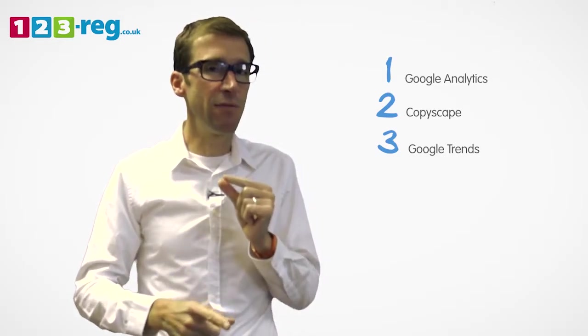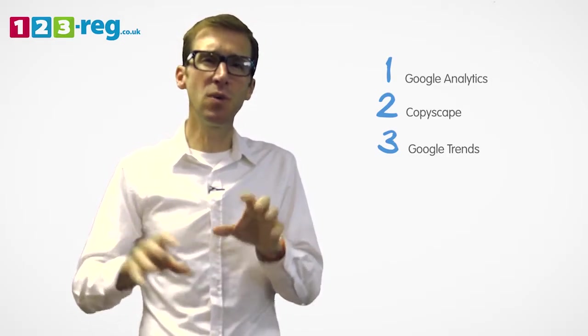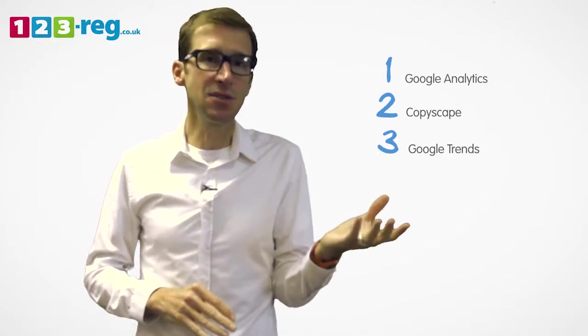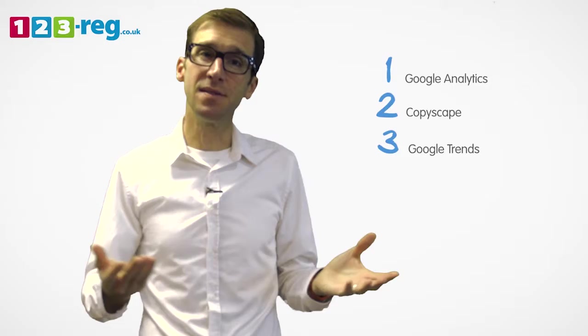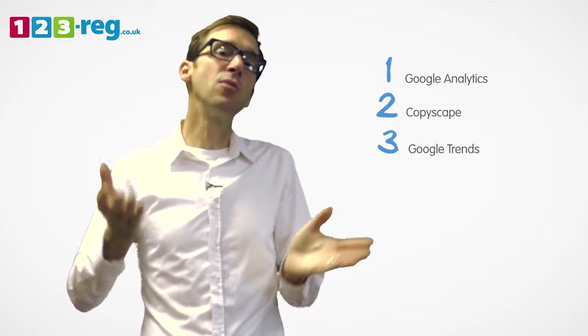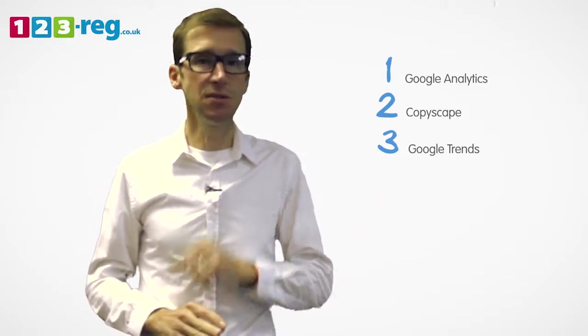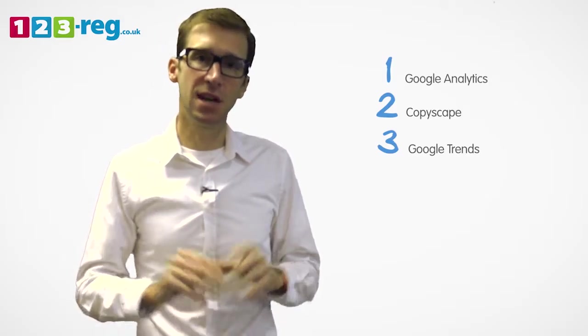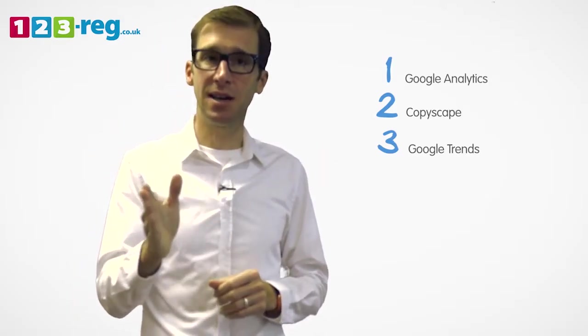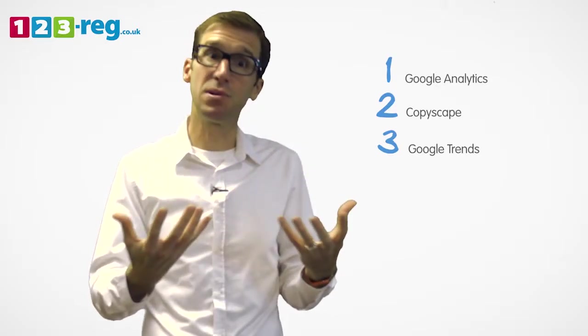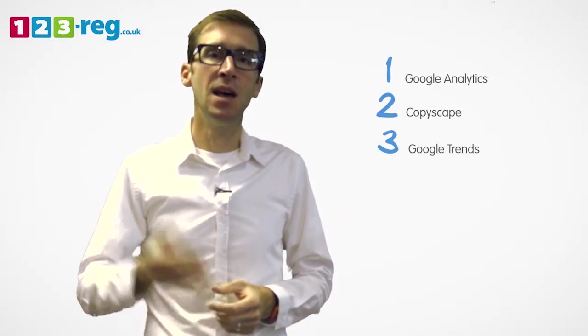The second thing it's good for is benchmarking. So if you're trying to work out whether to sell exhaust parts or tires and you want to know where there is more demand, Google Trends will tell you whether there's more people searching for exhausts or more people searching for tires. And you can use that information to decide how to prioritize your website, how to prioritize the content on your website and which products that you might want to sell.